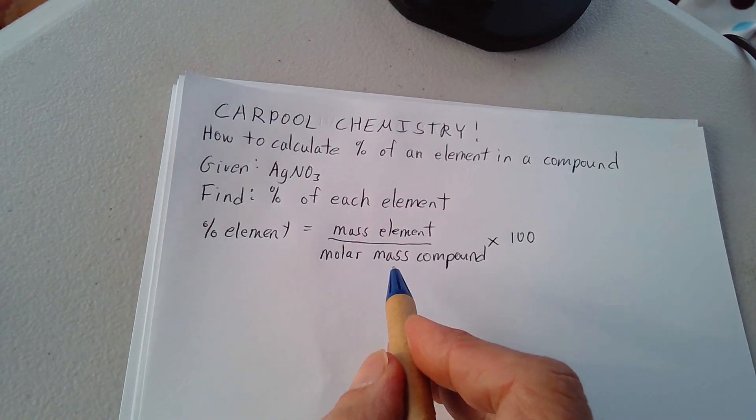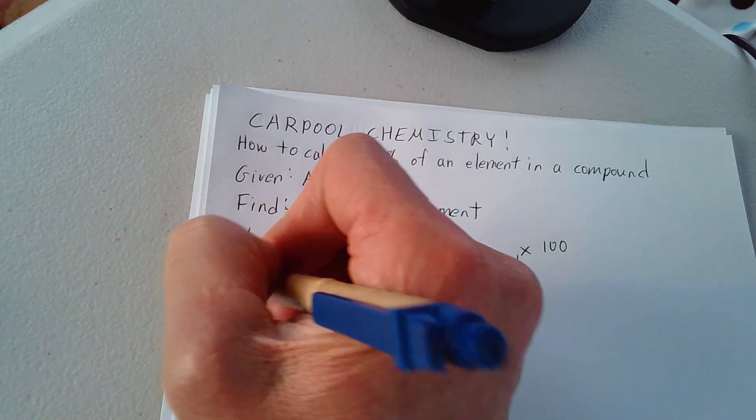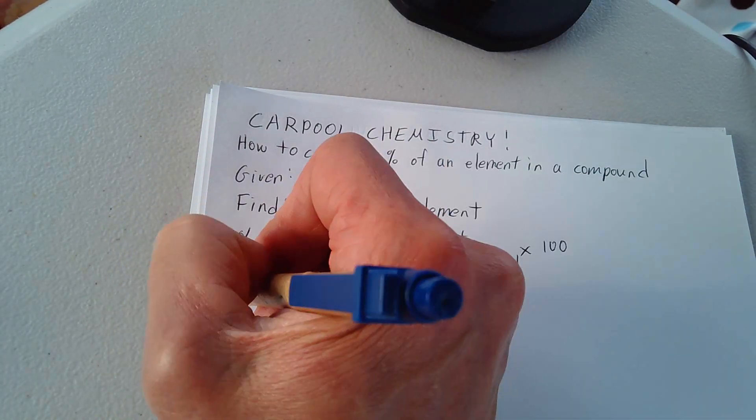The first thing we need to do is take a look at the molar mass. Let's calculate the molar mass of silver nitrate. We know how to do that.